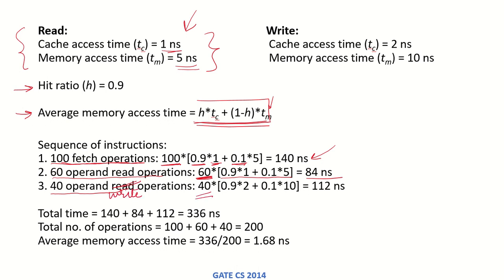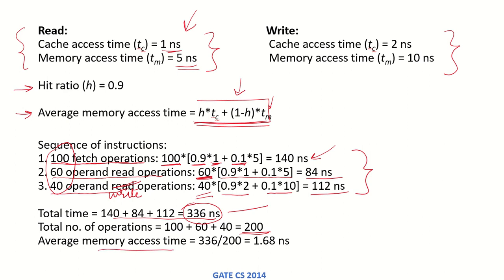For the 40 write operations, applying the formula with the values for write operations: 40 × (0.9 × 2 + 0.1 × 10) = 112 nanoseconds. The total time is 140 + 84 + 112 = 336 nanoseconds. The total number of operations is 100 + 60 + 40 = 200. So the average memory access time is 336 divided by 200, which is 1.68 nanoseconds.